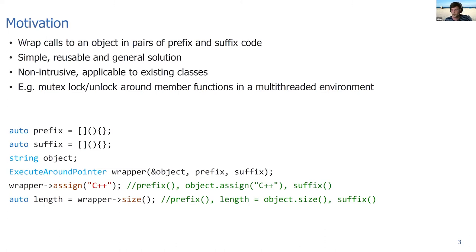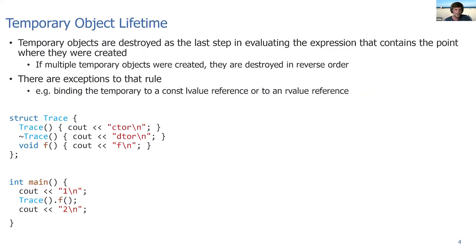There are two language features we have to know about to get this working. The first one is the temporary object lifetime. When you have a temporary object constructed, it gets destructed at the end of an expression. If you have multiple temporary objects, they are destructed in reverse order. There are some exceptions to that rule, like if you're binding a const lvalue reference or an rvalue reference, then you can keep the temporary object living. But in general, it gets destroyed at the end of an expression, typically the semicolon.